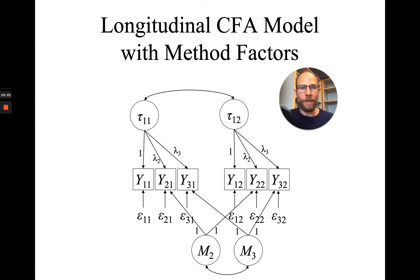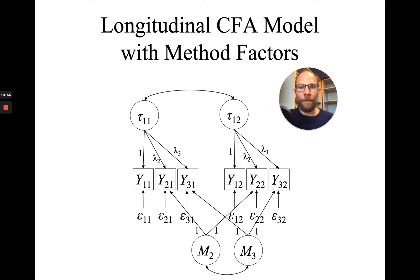For example, if you have one positively worded item as the marker — say an item that reads 'I am happy' — and two other items where one says 'I am unhappy' and the other says 'I am dissatisfied,' then those negatively worded items might share specific variance with one another above and beyond what they share with the happy marker indicator. That would be indicated by the correlation of those method factors. This model is more parsimonious than the error covariance model when you have more time points and more variables, because regardless of the number of time points, you only estimate a variance for each of those method factors and then the covariances of those factors if necessary.